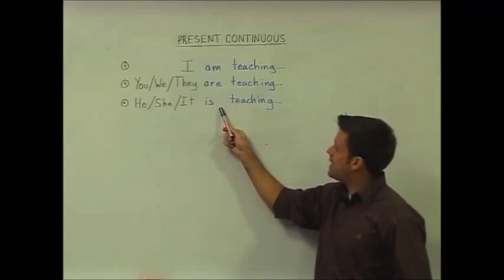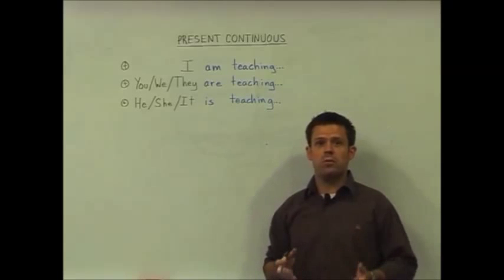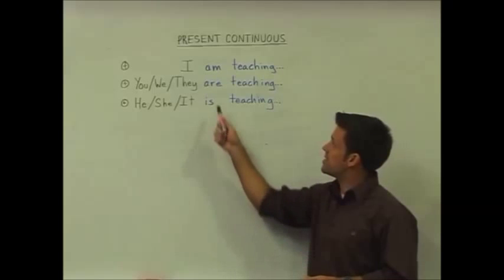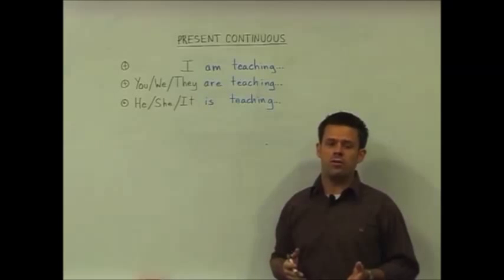The am, are, and is are forms of the verb to be, and here with this tense it's used as an auxiliary verb or a helping verb.